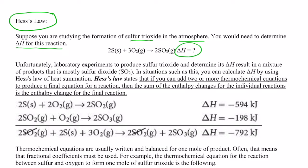Unfortunately, laboratory experiments to produce sulfur trioxide and determine its delta H result in a mixture of products that is actually mostly sulfur dioxide, not sulfur trioxide, which is what we're after. So in situations such as this, we can calculate the delta H by using Hess's Law.